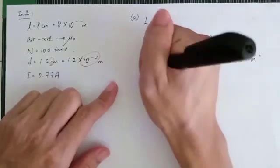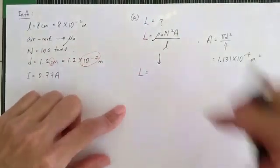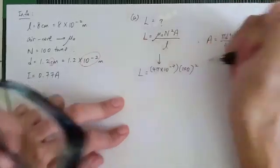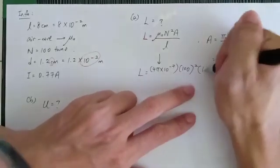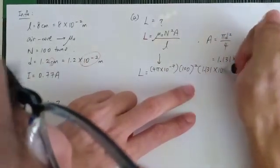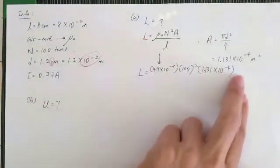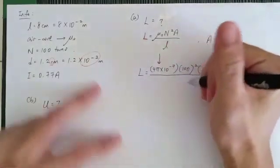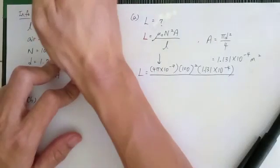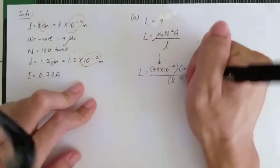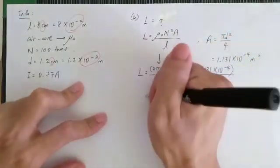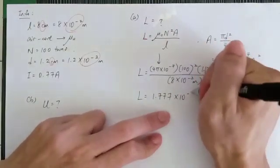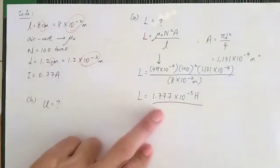Now we substitute all values into L equals mu naught N squared A over l. Mu naught is 4 pi times 10 to the negative 7, number of turns is 100 so N squared, area is 1.131 times 10 to the negative 4 meter squared — in SI units, not centimeter squared — and the length is 8cm converted to SI units, which is 8 times 10 to the negative 2. Finally, we get L equal to 1.777 times 10 to the negative 5 Henry. Henry is the unit for self-inductance.